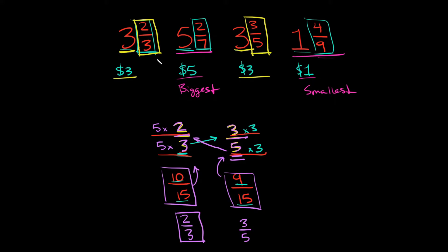So going back to the top, both of these have the same whole number. But this change is bigger than 3 and 2 thirds is bigger than 3 and 3 fifths. So we'll say 3 and 2 thirds is the second biggest. And then 3 and 3 fifths is the third biggest.